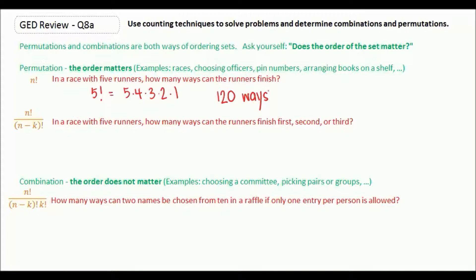In this case, we're not ordering all five of the runners, just a couple of them. In your calculator, there's often a button that will do this for you. In that case, we would say we're taking our five runners.